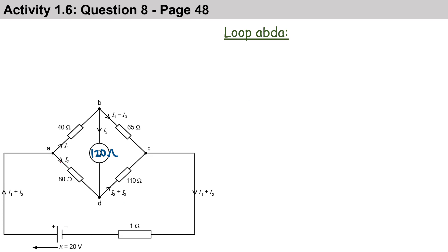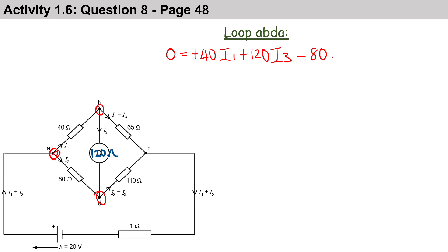Let's start with loop ABDA. Taking a look at loop ABDA, there's no battery or EMF, so our EMF is going to be zero. For our voltage drops we have plus 40 ohms multiplied by i1, plus 120 ohms multiplied by i3 — both clockwise — and then minus 80 ohms multiplied by i2 because that's anti-clockwise.